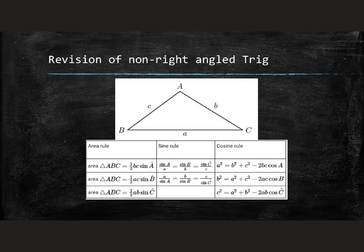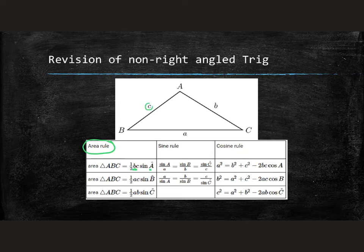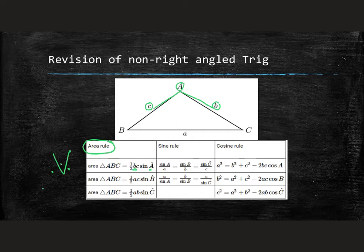Let's take the area rule, which we're doing in green. The area rule of any triangle is essentially looking for a corner — we need sides B and C and angle A. What we're looking for with the area rule is two sides and an included angle. If this were grade 9, we would call it side-angle-side in terms of congruency. So we want an included angle.